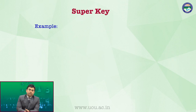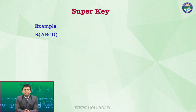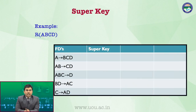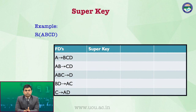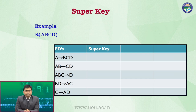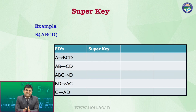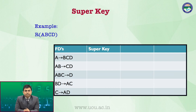Let's take an example. We have a relation called A, B, C, D as we have seen before. Now there are some functional dependencies given here: A identifies B, C, and D. Second is A, B identifies C and D. Third one is A, B, C identifies D. Fourth is B, D identifies A and C. Last one is C identifies A and D. So now we have to see which is a super key.